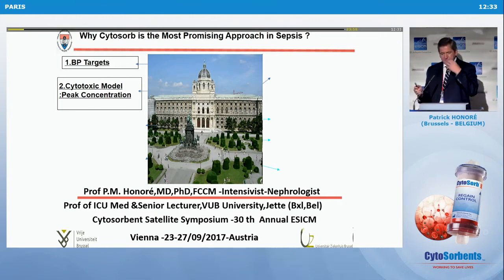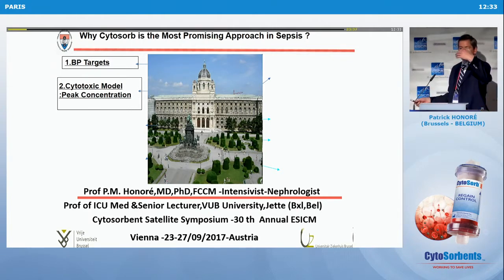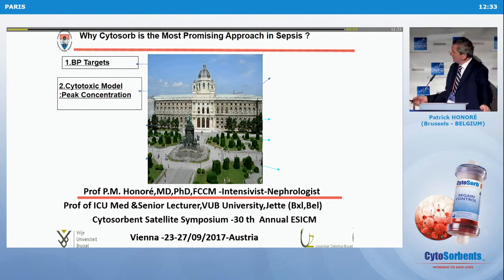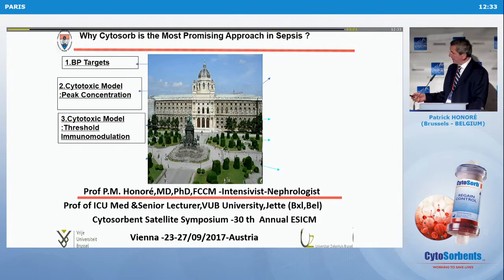We also have the question of biologic rationale — what kind of hypothesis do we have to say that removing cytokines might improve survival? We have several models: the cytotoxic model, the peak concentration hypothesis from our chairman Claudio Ronco, another model — the threshold modulation from our group — and a very recent, very interesting hypothesis about the cytokinetic model.